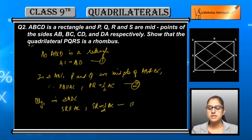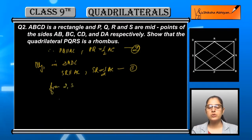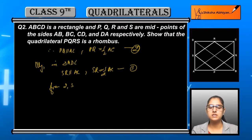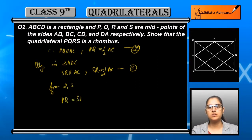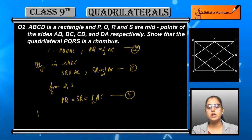Now we consider the second triangle, triangle ADC. Similarly, by the midpoint theorem, SR is parallel to AC and SR is equal to half of AC. This is equation number three.